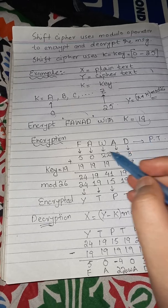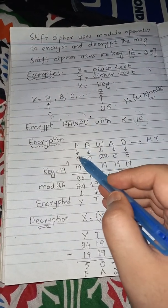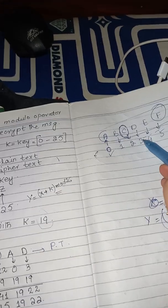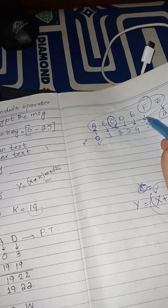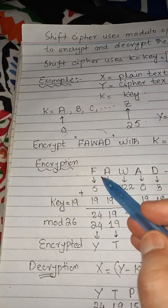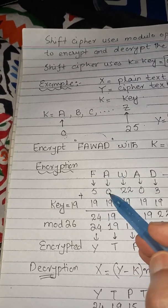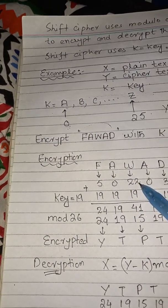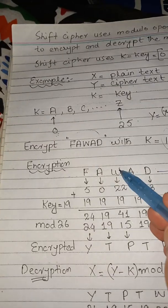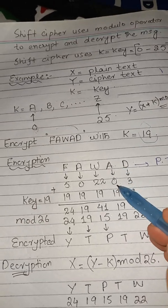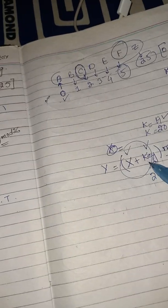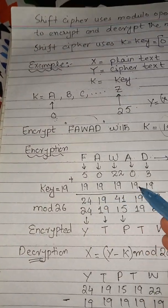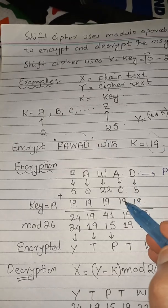First we convert each letter of 'Fawad' to its numeric value. A equals 0, B equals 1, C equals 2, D equals 3, E equals 4, F equals 5. So F equals 5, A equals 0, W equals 22, A equals 0, D equals 3. The key K is 19 and is applied to each letter — so we add 19 to each numeric value.